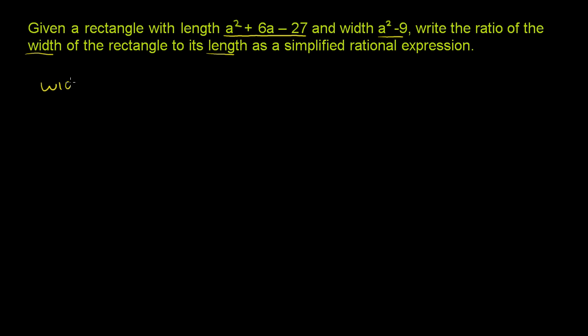We want the ratio of the width to the length of the rectangle. The expression for the width of the rectangle is a² - 9. We want the ratio of that to the length. The length is given right over there: a² + 6a - 27.